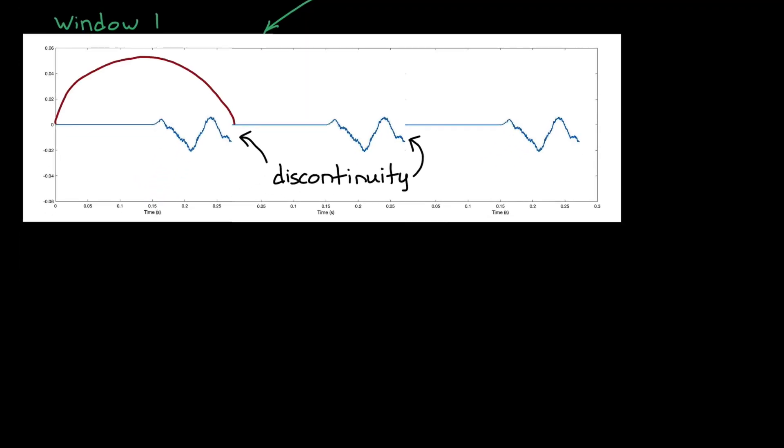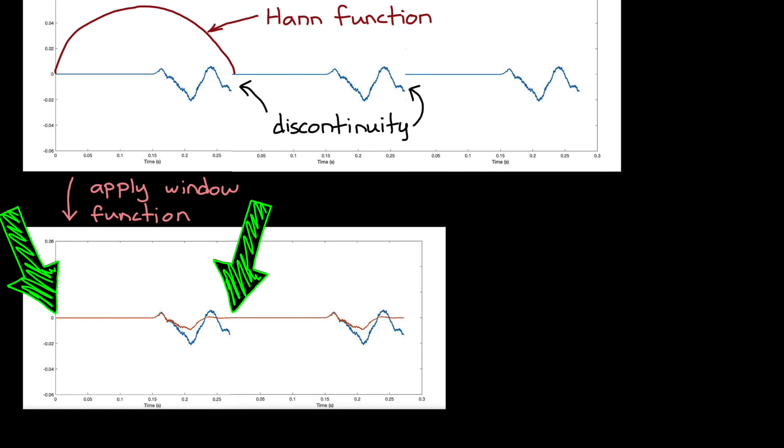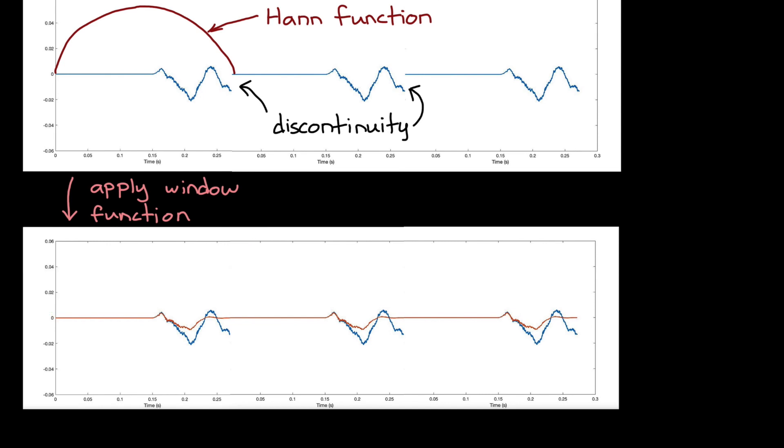So to fix this we apply a window function. There's a bunch of different window functions, but in this example I'm using a Hann function. And the details don't really matter because the general idea behind all window functions is mostly the same. They start and end at zero, and have some kind of scaling in between. And since the window function starts and ends at zero, when I multiply it with the audio segment it guarantees that the resulting signal also starts and ends at zero. Which means there won't be that discontinuity when it repeats. Now this scaling fixes the discontinuity but you can see that we're losing some information near the edges of the window, but as I'll show you shortly, that's why the windows overlap.